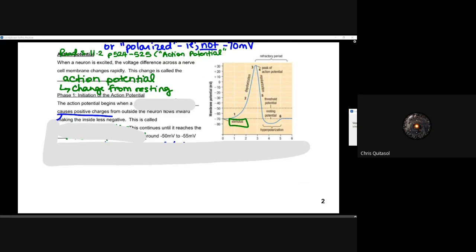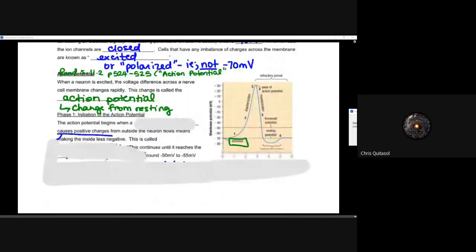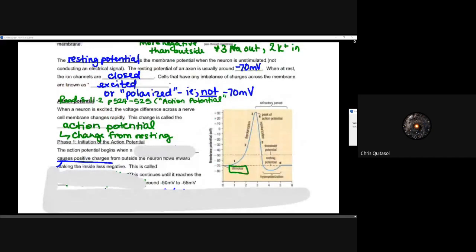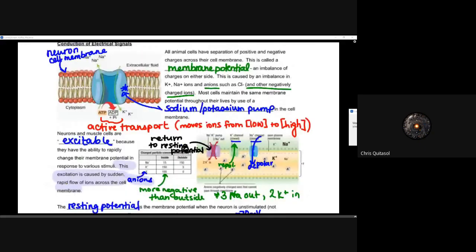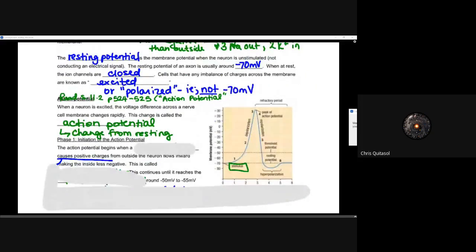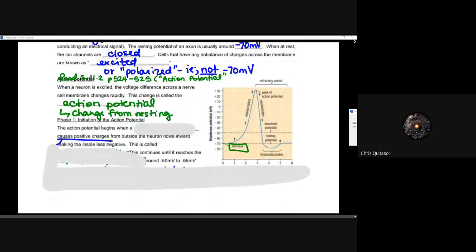So phase one: the initiation of that action potential. Recall back to what we've known so far — we have that membrane potential in a neuron, its resting potential is minus 70 millivolts. That means when all of the ion channels are closed, we have a more negative inside than outside. So in order to send that signal down, we have to have a change in that resting potential charge.